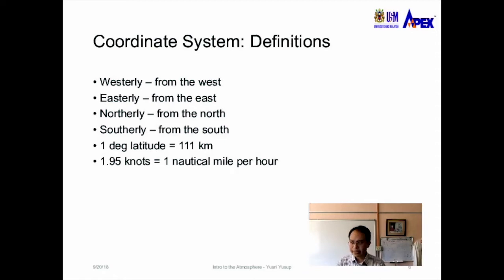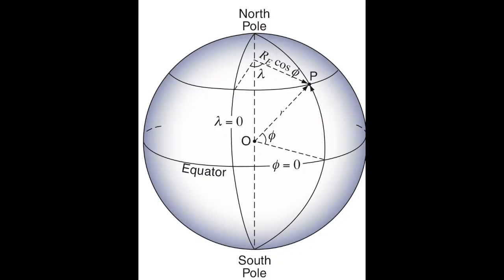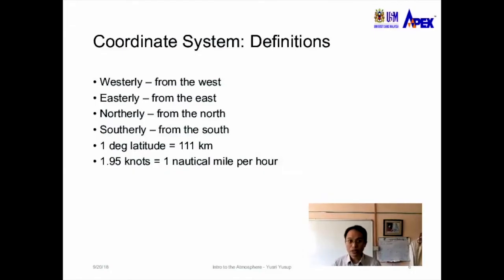As a useful approximation, one degree of latitude corresponds to approximately 111 kilometers in the north-south direction. However, for longitude, one degree does not have a fixed distance — it varies with latitude. Near the equator, one degree of longitude covers a large distance, while near the poles it covers a much shorter distance.